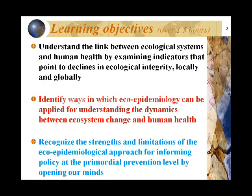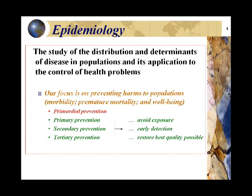The third learning objective is to recognize the strengths and limitations of the eco-epidemiological approach for informing policy at the primordial prevention level. This requires an opening of our minds, and I'll take us through why this is so important to address these very important global issues. But first, it's relevant to put us all on the same footing in terms of our classical epidemiological training and backgrounds.